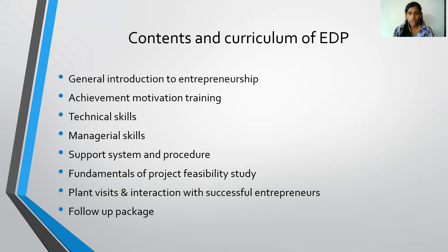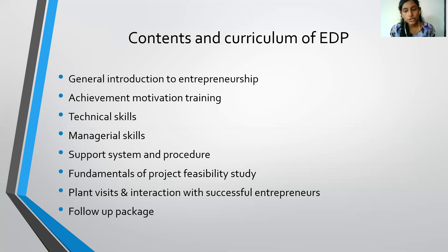Next is Support System and Procedure. Entrepreneurs need support from various institutions which provide free consultancy services and training. Participants in the training program need to be made aware of the support and assistance available from various institutions and agencies for setting up small-scale enterprises. After imparting this awareness, they are acquainted with the procedure to approach, apply to, and obtain support from these institutions.